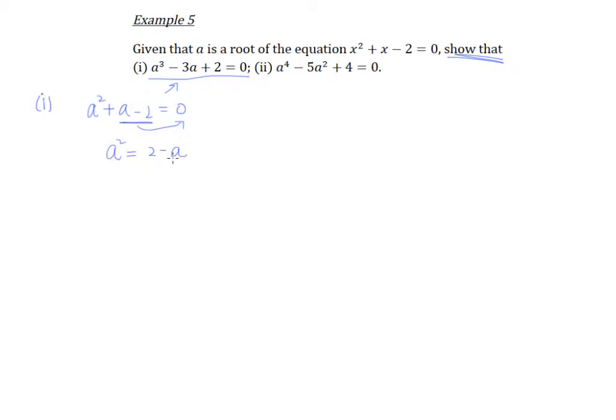And now you notice that right from the beginning, right from here, there isn't any a cubed. So the thing that we're supposed to show has an a cubed, right? Naturally means that we need to somehow figure out how to get a cubed. And it sounds like a good idea that we start from here and we multiply throughout by a. So that gives us our a cubed plus a squared minus 2a is equal to 0.